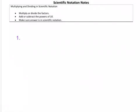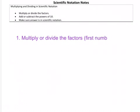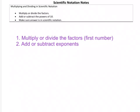The first step is to multiply or divide the factors — that first number in scientific notation. The second step is to add or subtract your exponents depending on if you're multiplying or dividing. Remember our exponent rules.